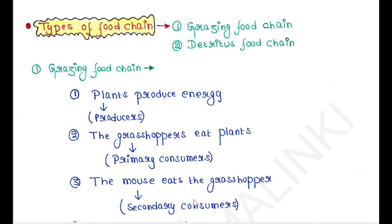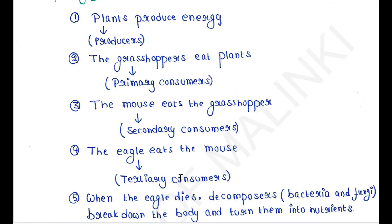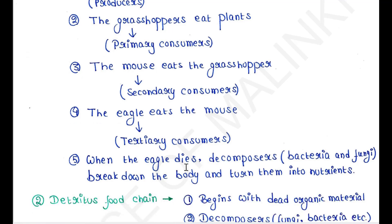Let's talk about the types of food chain. There are mainly two types: the grazing food chain and the detritus food chain. In the grazing food chain, plants are the producers who produce energy. Grasshoppers are the primary consumers who eat plants. Mice are the secondary consumers who eat the grasshoppers. Eagles are the tertiary consumers who eat the mice.